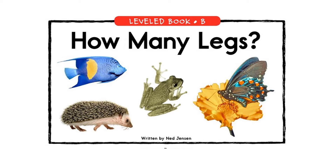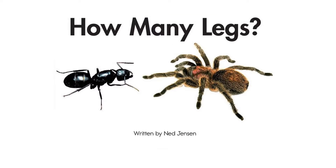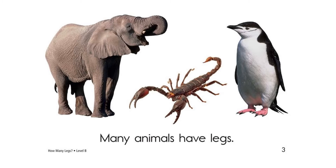Today our book title is 'How Many Legs,' written by Ned Jensen. Before we start, we focus on the sight word 'have.' The sight word is highlighted here: many animals have legs.